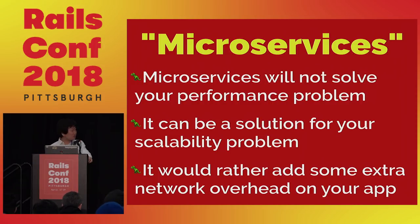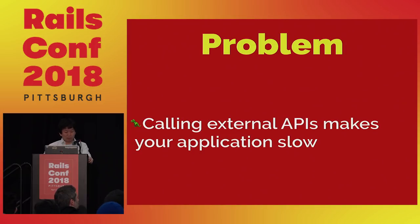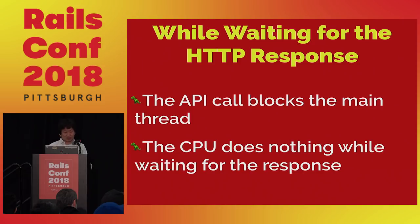When you introduce microservices to your application, it usually adds some extra network overhead and makes your application actually rather slower. Calling external APIs makes your application slow because it costs HTTP network overhead. This happens because the API call blocks the main thread while requesting to another HTTP server, and the CPU does nothing while waiting for the response.